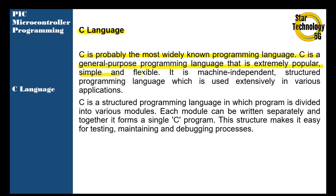C is extremely popular, simple and flexible. It is a machine independent, structured programming language which is used extensively in various applications. C is a structured programming language in which the program is divided into various modules. Each module can be written separately and together they form a single C program. This structure makes it easy for testing, maintaining and debugging the process.